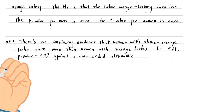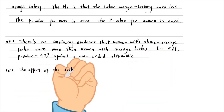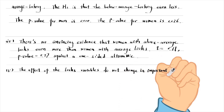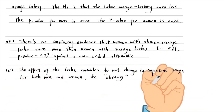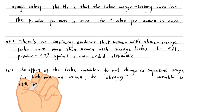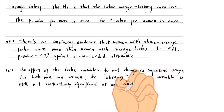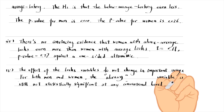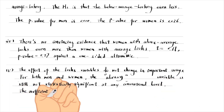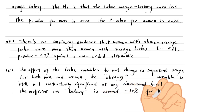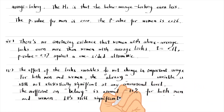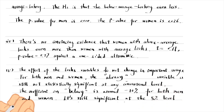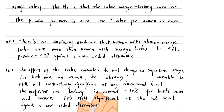For part 5, the effects of the looks variables do not change in important ways. For both men and women, the above average looking variable is still not statistically significant at any conventional level. The coefficient on the below average looking variable is around minus 10% for both men and women. It is still statistically significant at the 5% level against a one-sided alternative.